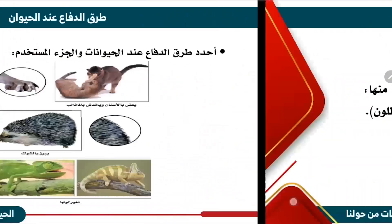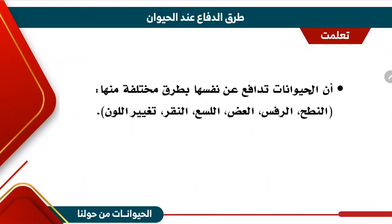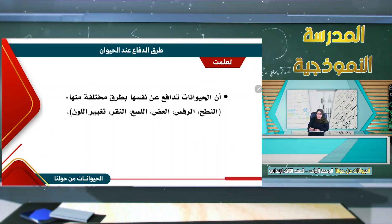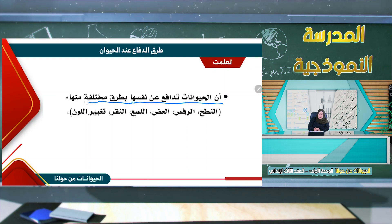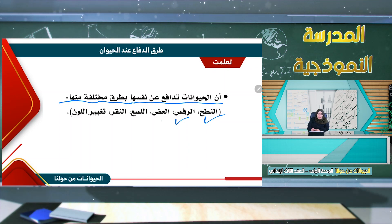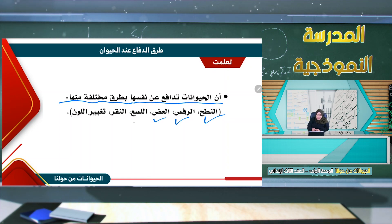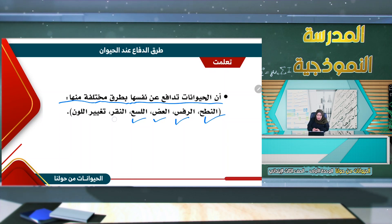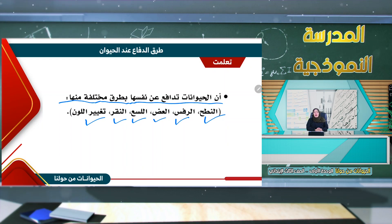تعلمنا أن الحيوانات تدافع عن نفسها بطرق مختلفة: النطح كالخروف، الرفس كالحصان، العض كالقط، اللسع كالنحل، النقر، وتغيير اللون مثل الحرباء.